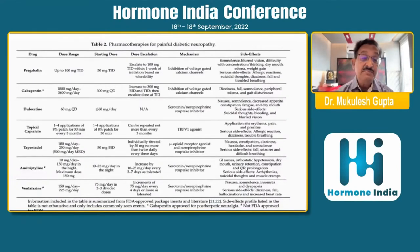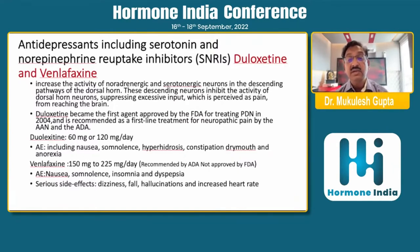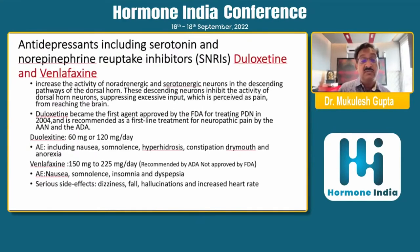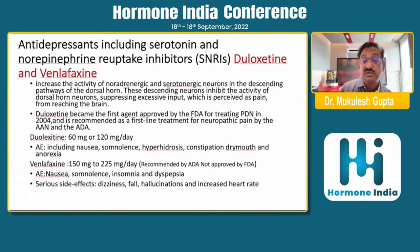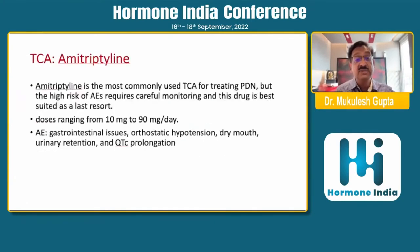Agents beyond pregabalin and gabapentin include duloxetine, topical capsaicin, tapentadol, amitriptyline, and venlafaxine. Duloxetine and venlafaxine work by increasing the activity of noradrenaline and serotonin neurons in the descending pathway of the dorsal horn cell, inhibiting dorsal horn neuron activity and suppressing excessive pain input from reaching the brain. Duloxetine became the first agent approved by FDA in 2004, at a dosage of 60 to 120 mg per day; common side effects are nausea, somnolence, hyperhidrosis, constipation, and dry mouth. Venlafaxine can be used at 150 to 225 mg, with similar side effects plus possible hallucinations and increased heart rate.